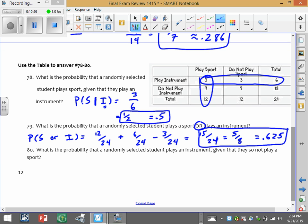And then one final question. What's the probability that a randomly selected student plays an instrument given that they do not play a sport? So look up in the table. Let me erase my previous work. How many students did not play a sport? Well, there's 12 of those.